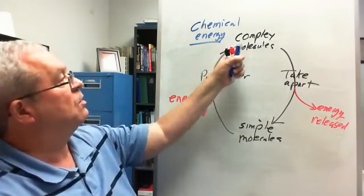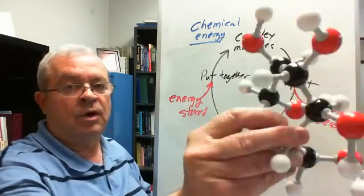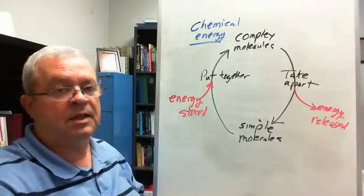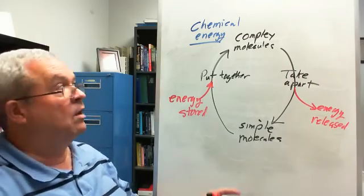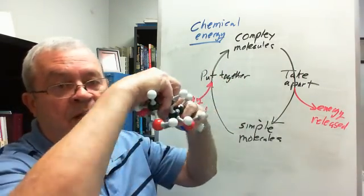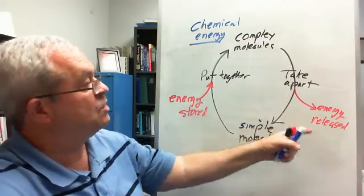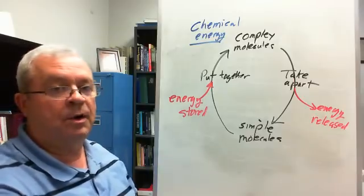Simple molecules put together to form complex molecules. Energy stored, where? Stored in the bonds of those complex molecules. What is that kind of energy called? Chemical energy. Complex molecules taken apart, the bonds broken, energy is released, and simple molecules are formed.